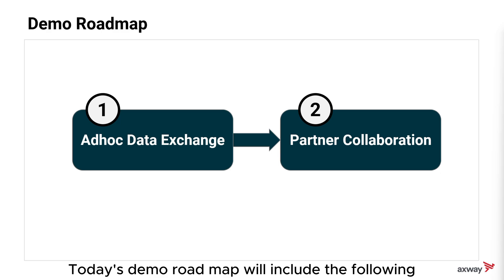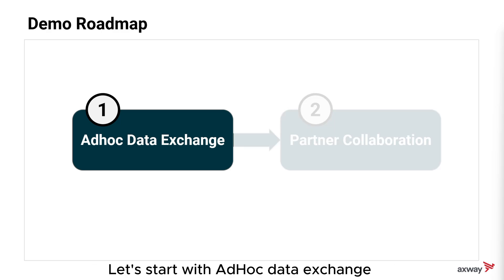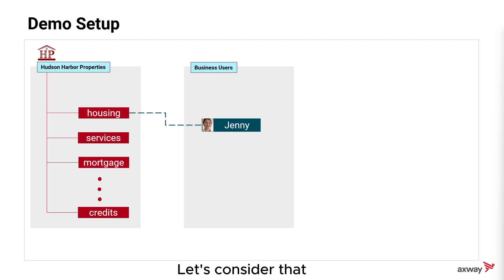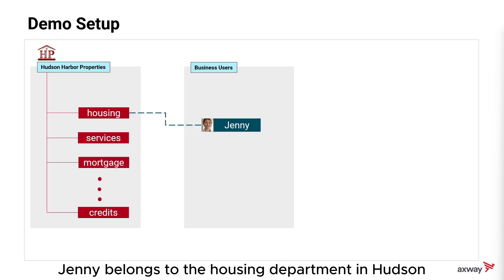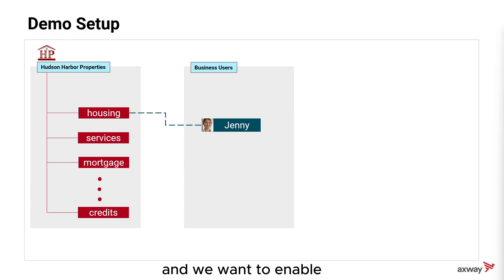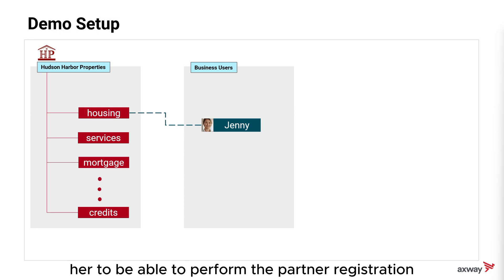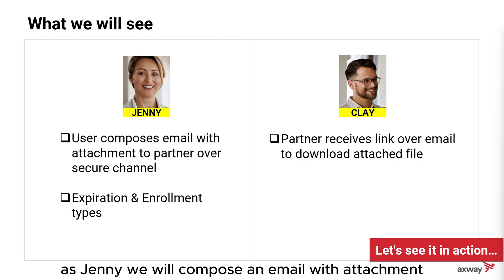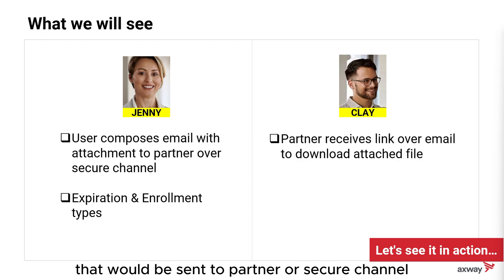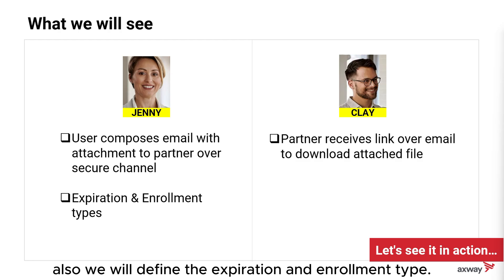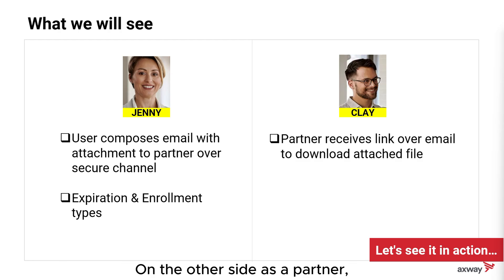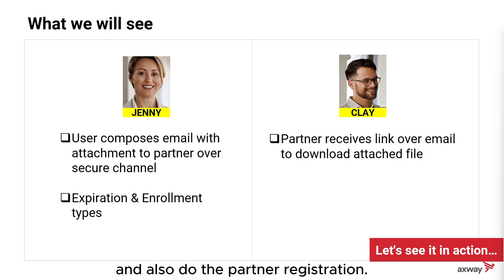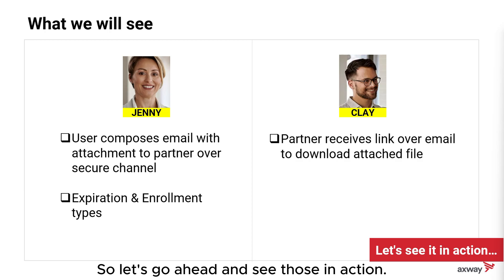Today's demo roadmap will include two topics. Let's start with Ad Hoc Data Exchange. In this demo setup, Jani belongs to the Housing Department in Hudson Harbor Properties, and we want to enable her to perform partner registration as well as ad hoc file movement with potential customers. As Jani, we will compose an email with an attachment to be sent to a partner over a secure channel, and we will define the expiration and enrollment type. On the other side, as a partner, Clay will receive a link over email to download the attached file and also complete the partner registration.